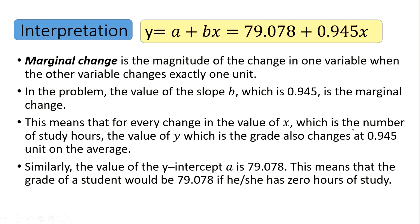So if you study more hours, your grade will increase by 0.945 on average. The value of the y-intercept a is 79.078, meaning that a student's grade would be 79 if he or she does not study at all — zero hours of study, meaning stock knowledge alone could yield a grade of 79. When x equals 0, the predicted grade is 79, which shows how we can predict possible values of y.